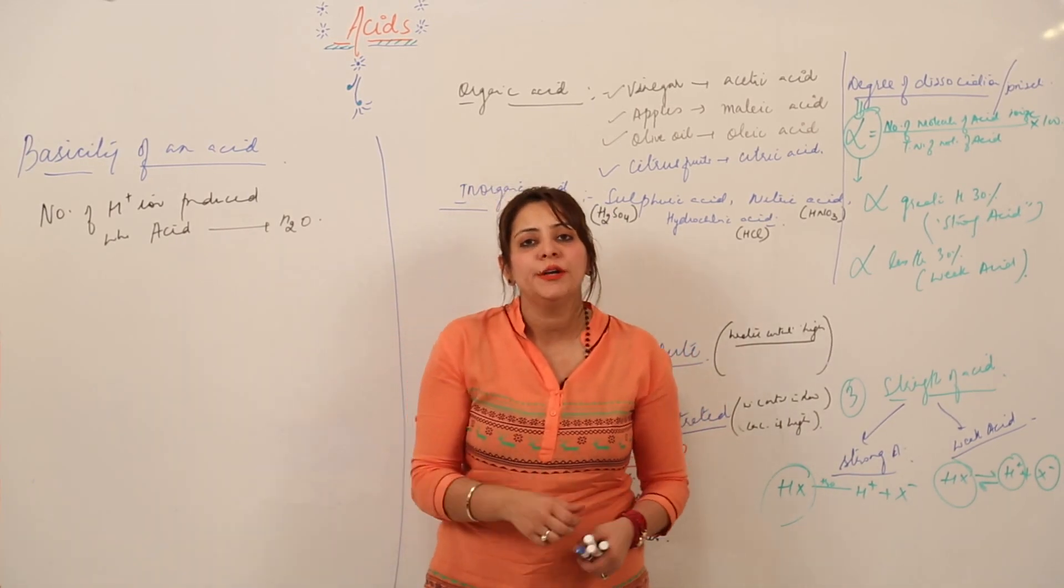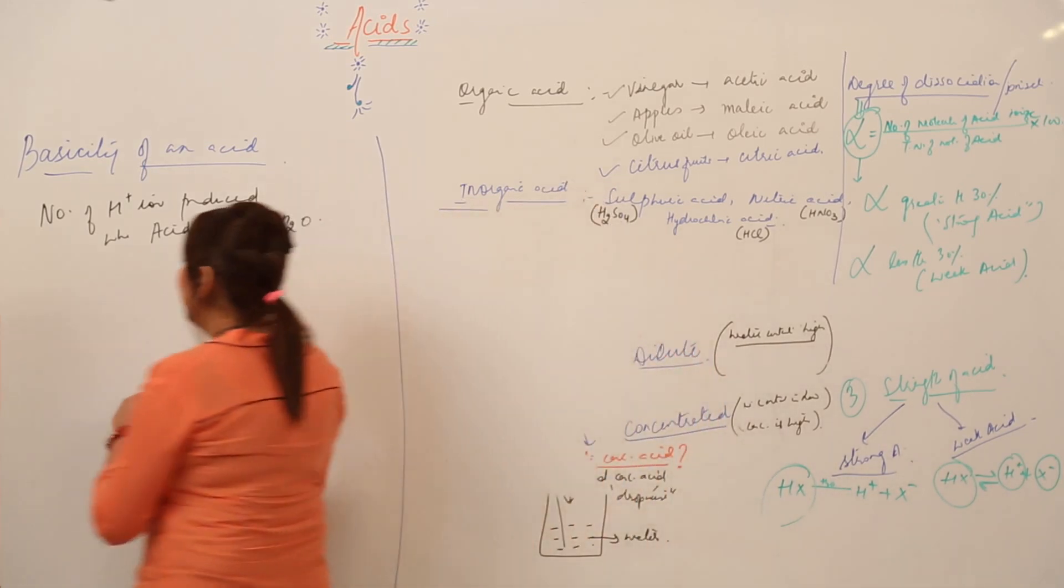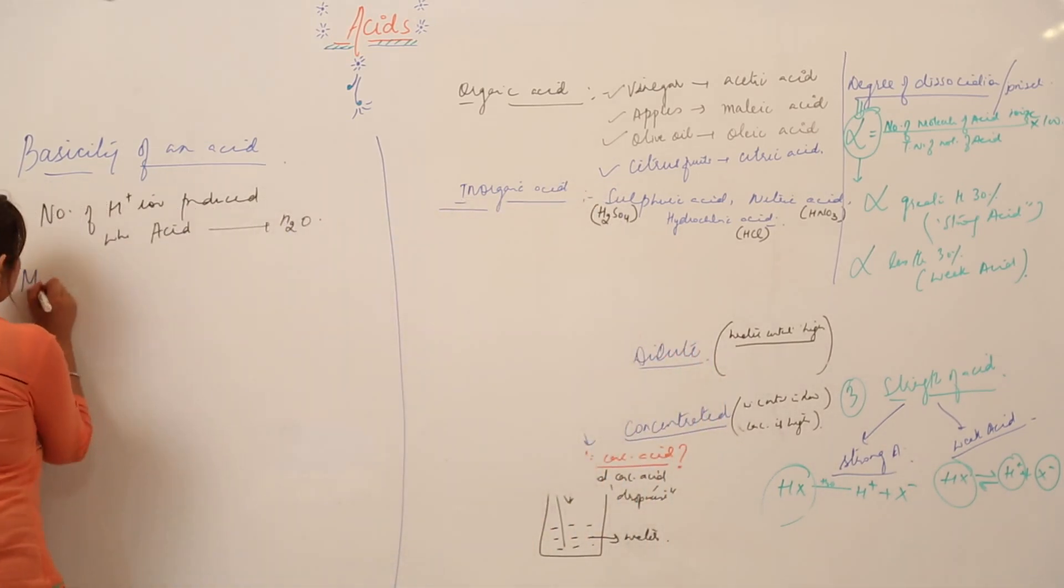We have mono basic acid, di basic acids, tri basic acids, or we can classify as poly basic acid. Now what is the difference between them?